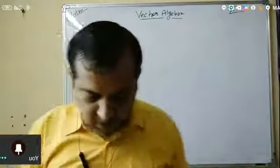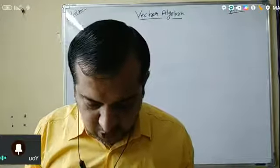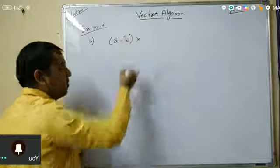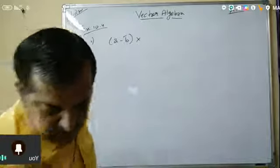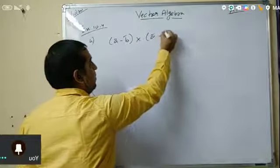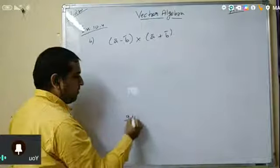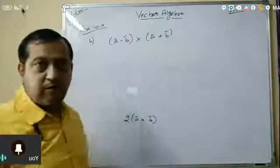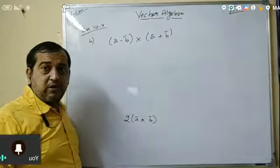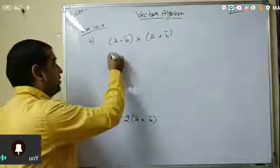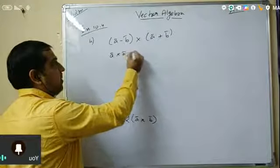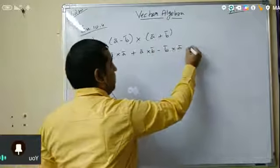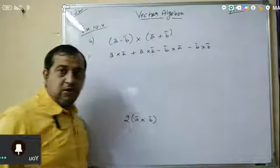Question 4 is very easy. Show that vector (a minus b) cross (a plus b) is equal to 2 times (a cross b). We have to prove this. By cross multiplication and bracket expansion, you will get: a cross a, plus a cross b, minus b cross a, minus b cross b.